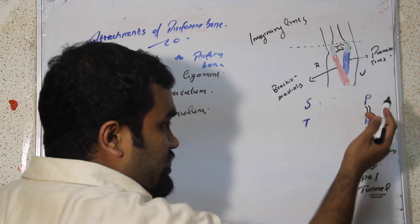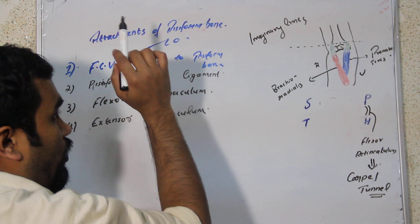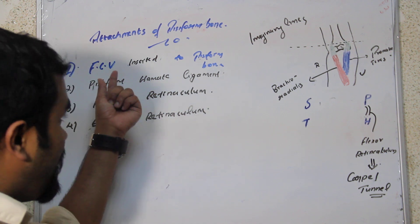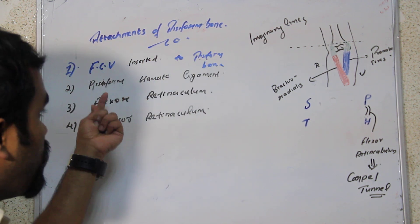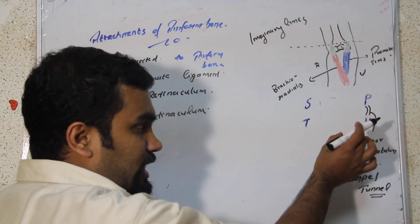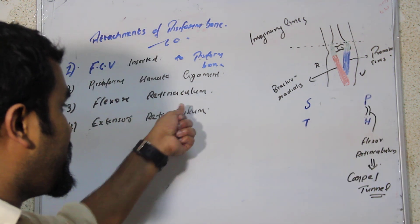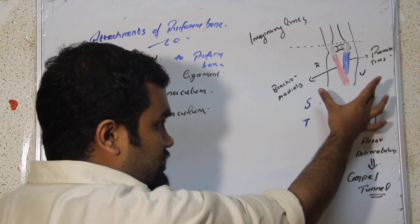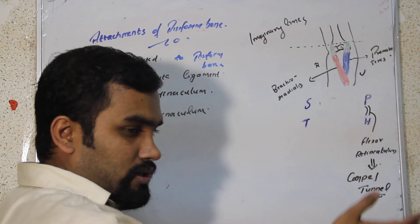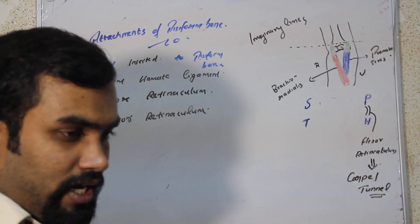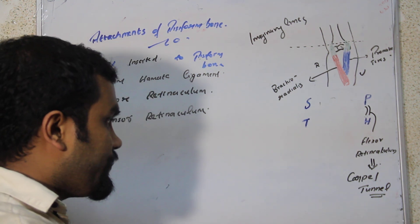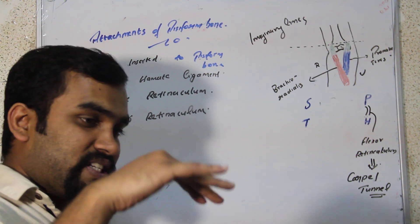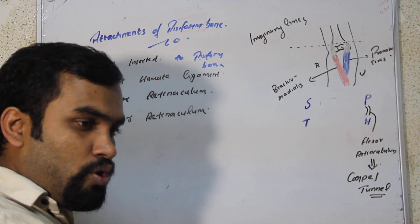The pisiform is the smallest carpal bone. The flexor carpi ulnaris (FCU) inserts into the pisiform on the ulnar side. The pisiform-hamate ligament connects the pisiform and hamate. The flexor retinaculum and extensor retinaculum are also attached. In our figure, the radius has the scaphoid and the ulnar side has the pisiform. Now we will study the carpal tunnel in depth — there is an important condition called carpal tunnel syndrome, and we need to know the structures passing over and through the carpal tunnel.